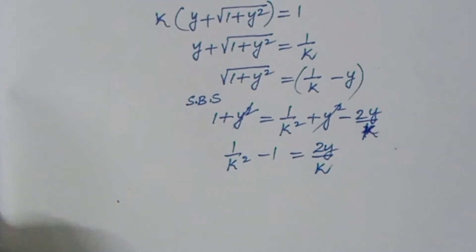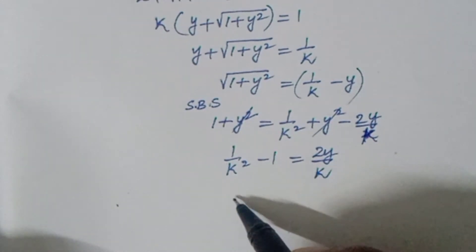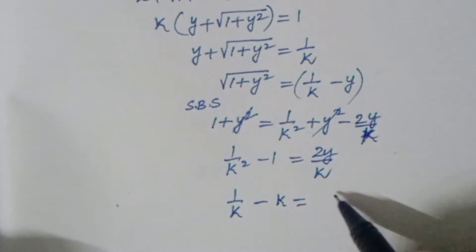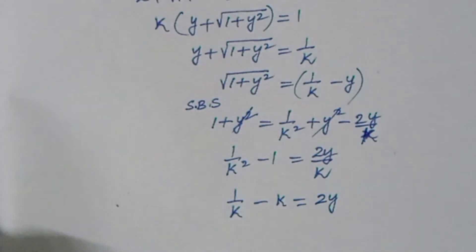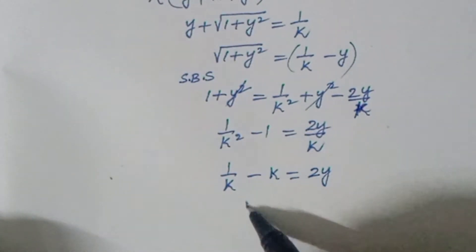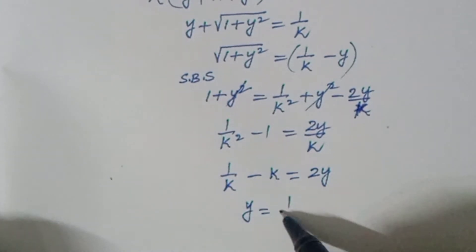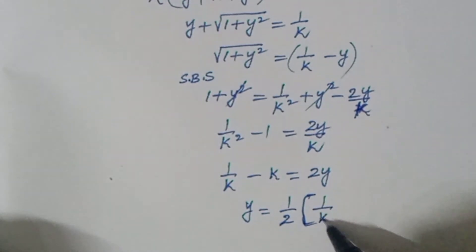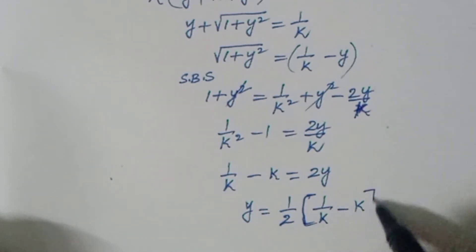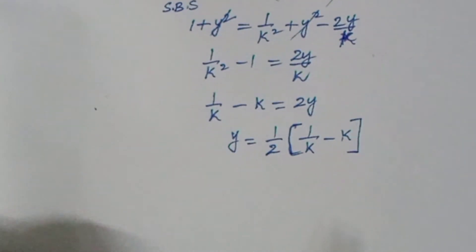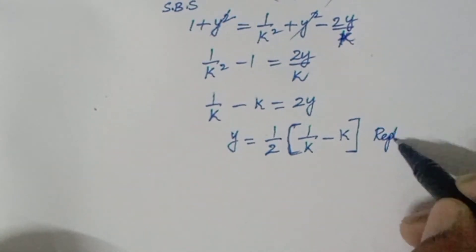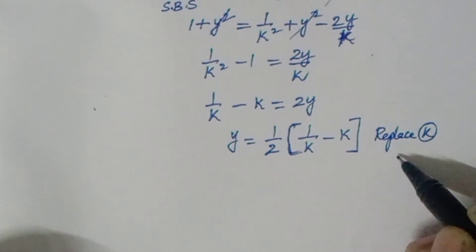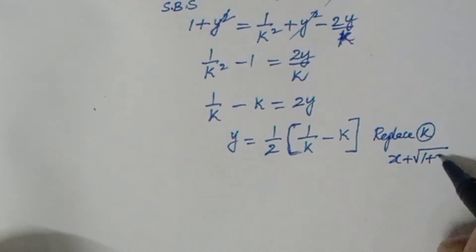Now I want the y value. Rearranging: 1/K − K = 2y. So y = (1/2)(1/K − K). Now we replace K with its value: K = x + √(1 + x²).